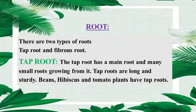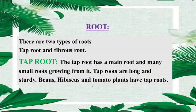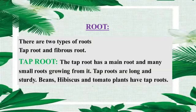Root. There are two types of roots: taproot and fibrous root. Taproot has a main root and many small roots growing from it. Taproots are long and steady. Beans, hibiscus and tomato plants have taproots. جڑیں، roots کی دو types ہوتی ہیں: taproot اور fibrous root۔ Taproot کی ایک بنیادی جڑ ہوتی ہے اور بہت ساری چھوٹی جڑیں اس سے grow کرتی ہیں۔ Taproot کی جڑیں لمبی اور مضبوط ہوتی ہیں۔ Beans، hibiscus اور tomato کے پودوں کی taproot ہوتی ہے۔